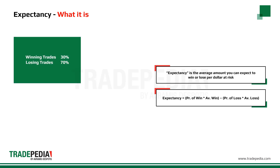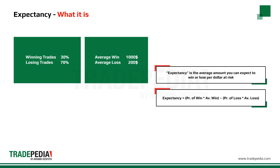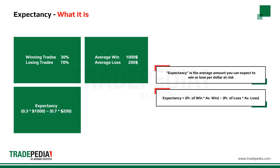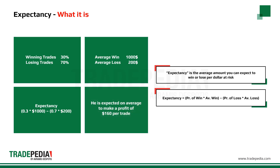For example, say that a trader has a system that produces winning trades 30% of the time and losing trades 70% of the time. The average winning trade gives a profit of $1,000, while the average losing trade is $200. Putting the numbers in the formula, we find an expectancy of $160. The trader is expected on average to make a profit of $160 per trade. So even though this system produces losing trades 70% of the time, the expectancy is still positive and thus the trader will make money over time.